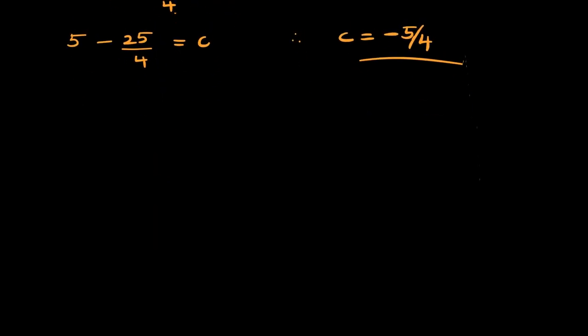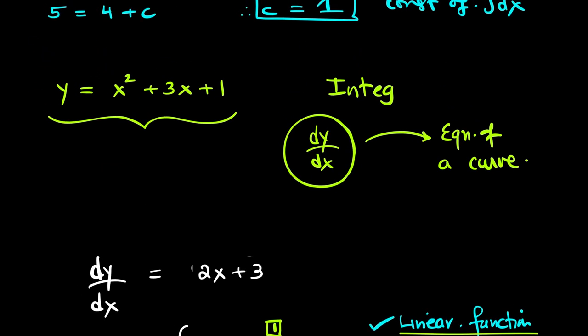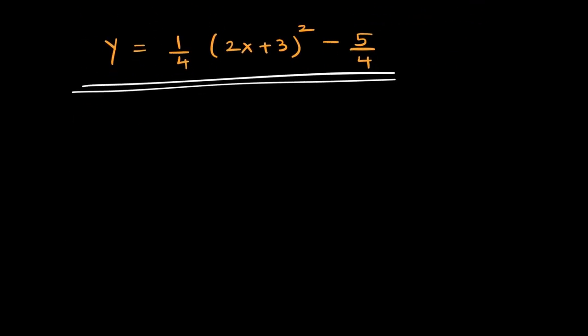Therefore, the equation of a curve is y equals 1/4(2x plus 3) whole square minus 5 over 4. Now, this equation definitely looks different from the equation of a curve which you see over here. Or are they really different?